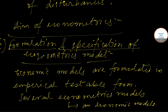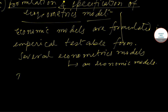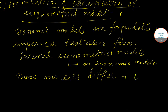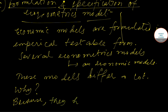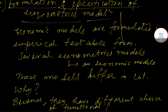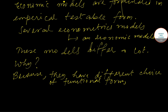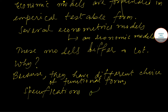These models differ a lot because they have different choices of functional form. There are also some specifications of the stochastic structure of the variables.